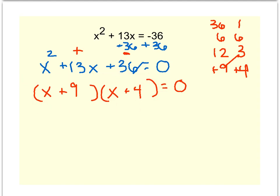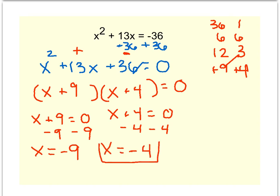But because we're solving by factoring, we need that equal 0 and we have to go one step further. x plus 9 equals 0 and x plus 4 equals 0. So when you subtract the 9 from both sides, you get x equals negative 9. When you subtract the 4, you get x equals negative 4. So we have two answers.